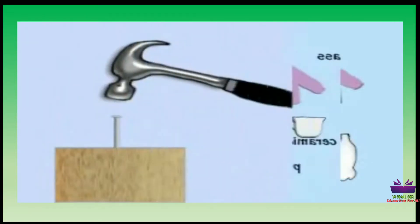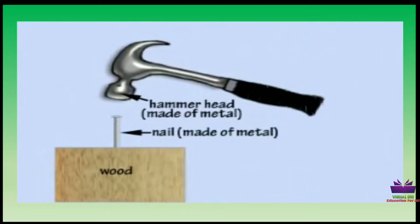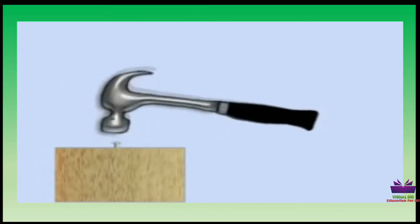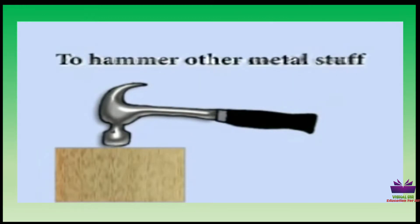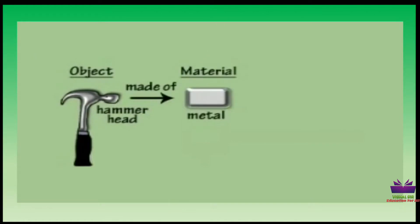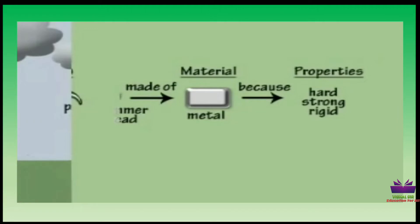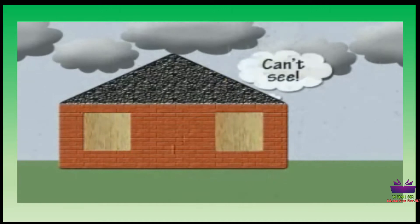When you want to hammer a nail into wood, a hammerhead of metal is good. You need something that's hard enough to hammer up the metal stuff. Choose your materials carefully, think about all of their properties. You wouldn't wear paper clothes in the rain, or use wood in a windowpane.